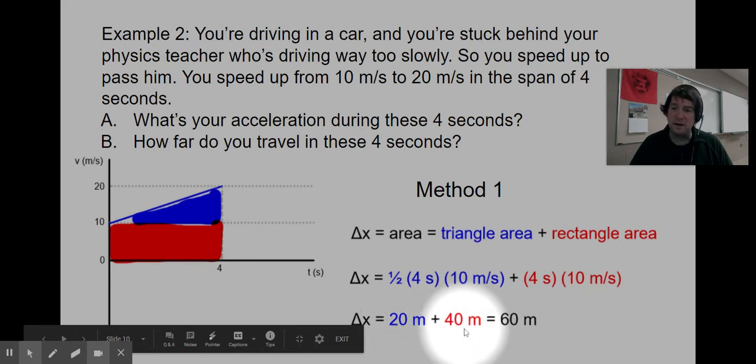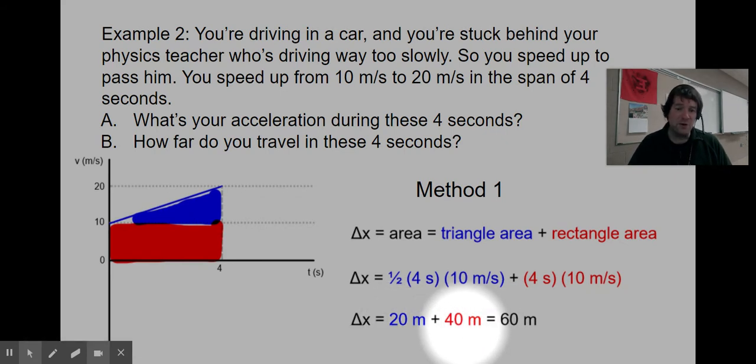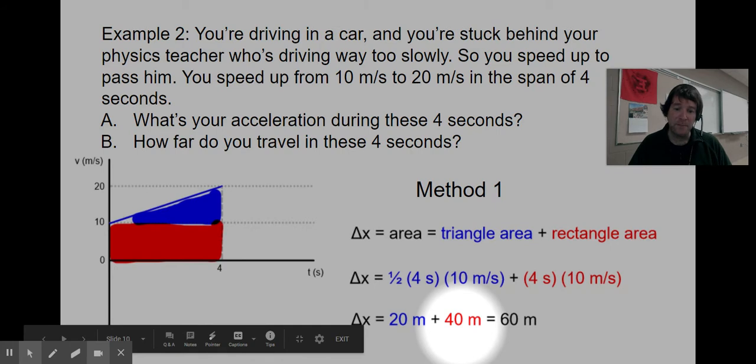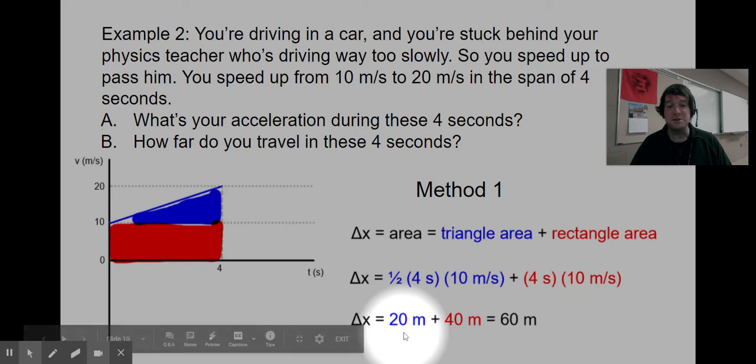That red area is how far you would have traveled if you hadn't sped up at all. That blue area is how much further you traveled because you sped up. That gives us a total of 60 meters for how far you go.